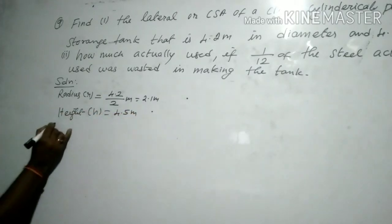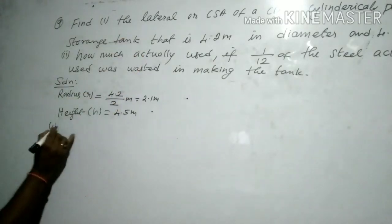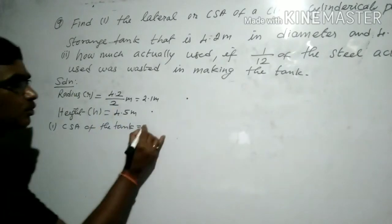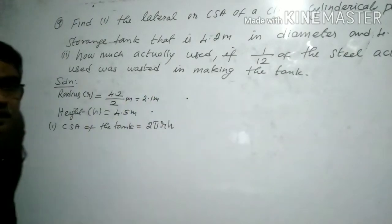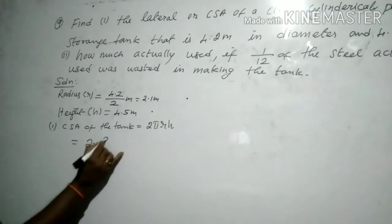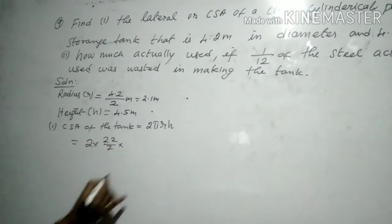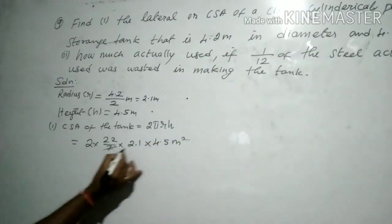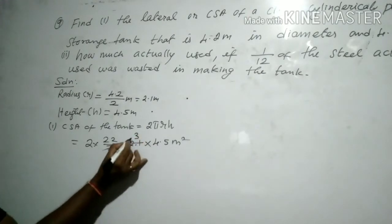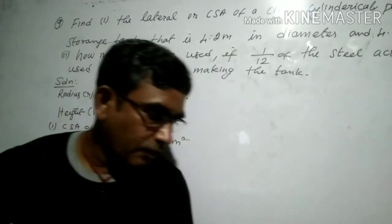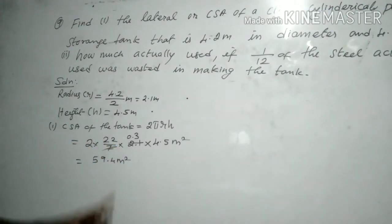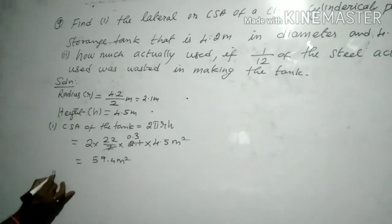The first question asks for the CSA of the cylindrical tank. CSA equals 2πrh, so two times pi value 22/7, times radius 2.1, times height 4.5 meter square. In the calculation, 7 and 3's are 21 — one place of decimal. Multiplying all together we get 59.4 meter square.